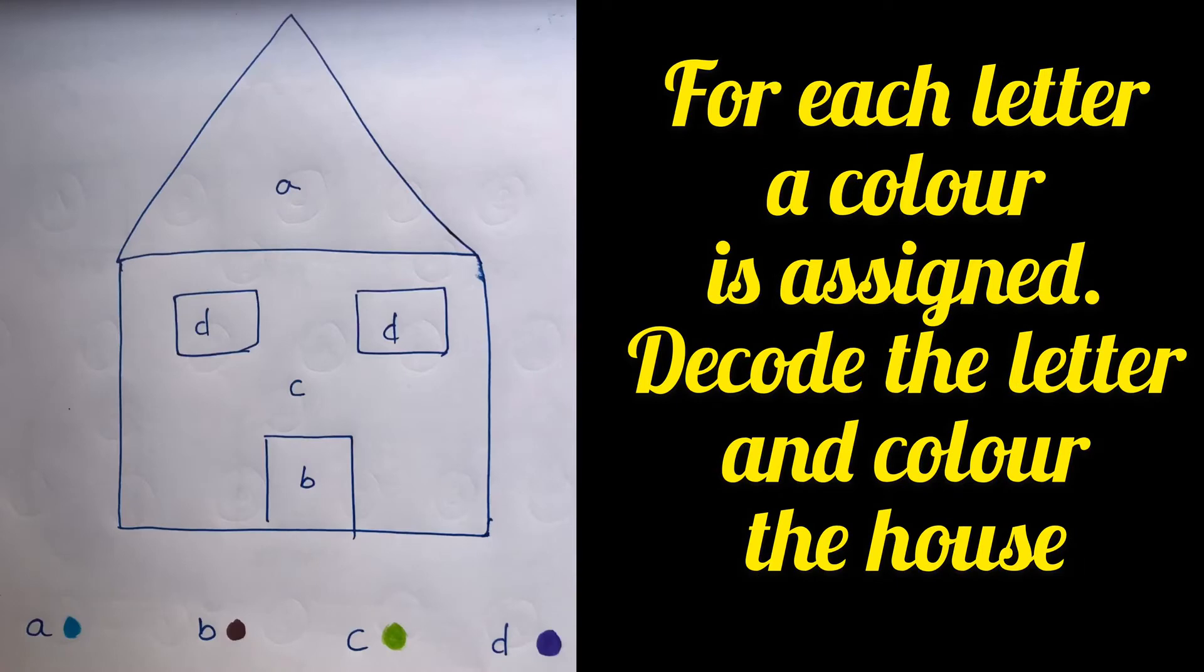And for the second worksheet, there's a house and there are some letters specified in the house. So the kid needs to decode the color to the letter. He'll identify which letter belongs to which color and he would be coloring the house exactly the same.